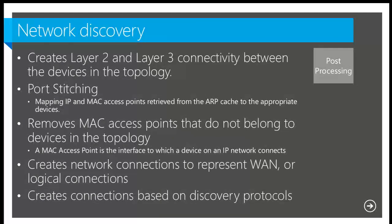In the third phase, post-processing, we create layer 2 and layer 3 connectivity between devices and the topology. We do port stitching — physical and virtual. You need an agent on the box you're monitoring; we stitch them based on IP and MAC address retrieved from both devices. We remove MAC access points that don't belong in our topology, create network connections to represent the WAN or logical connections, and create all other connections to show you this spider-web map of your network.